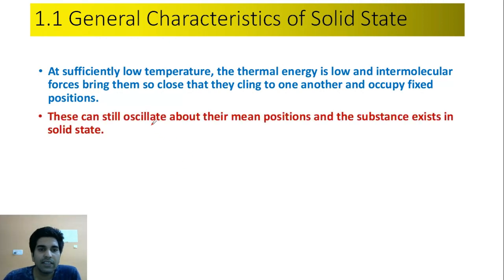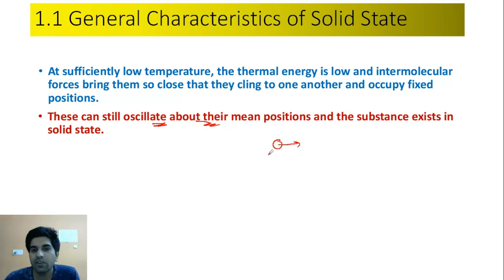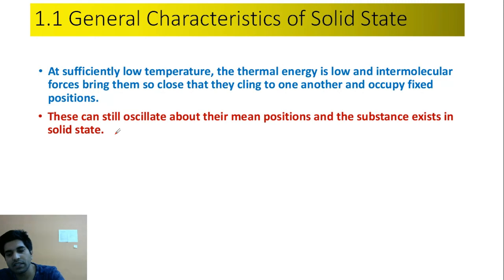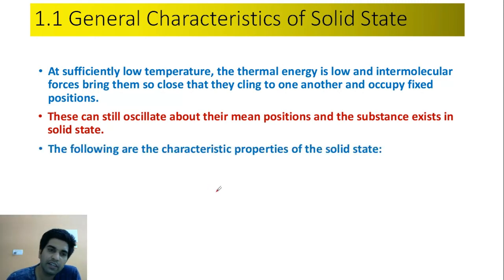These particles can still oscillate about their mean position. They cannot have translatory motion, but they can vibrate or oscillate in place. So the substance exists in the solid state. Exam में अगर पूछा जाए कि solid state में particles के पास कौन सा motion होता है — तो oscillatory motion या vibratory motion होता है।